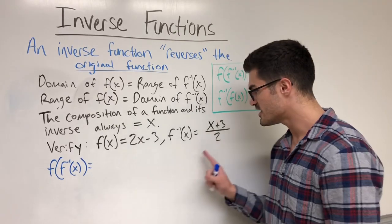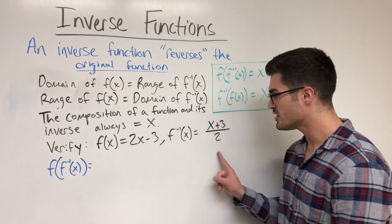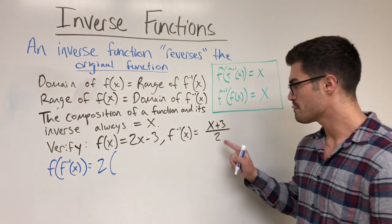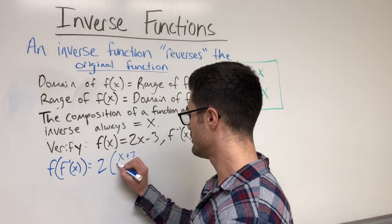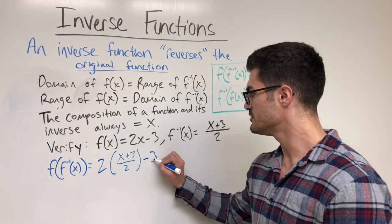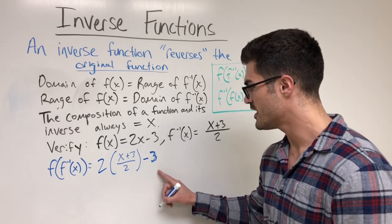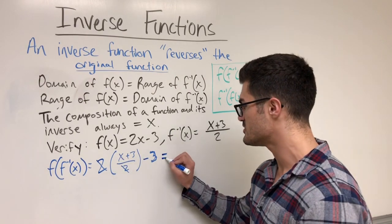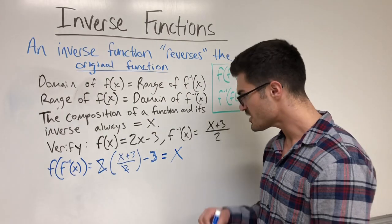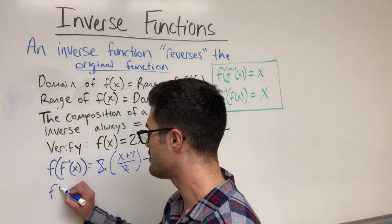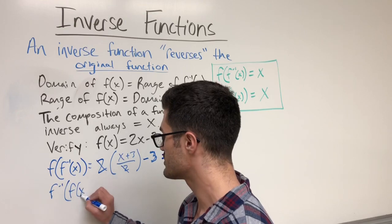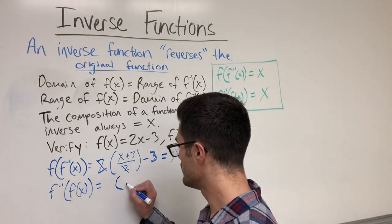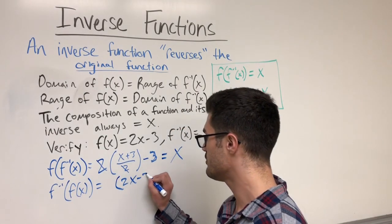First, I use the inverse as the inner function, plugging it into f. I have 2 times (x plus 3 over 2) minus 3. The 2s cancel, and I get x plus 3 minus 3, which gives me x. Now the other way: f inverse of f of x, where the original is the inner function — I substitute 2x minus 3 into the inverse.